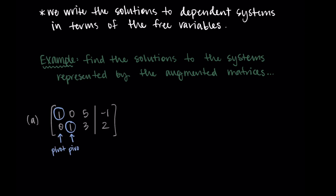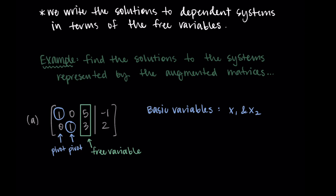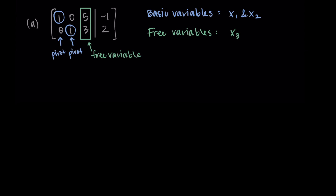Looking at our first matrix, I'll identify pivots column by column. The first column has a pivot and the second column has a pivot, so the third column represents our free variable. This tells me the basic variables are x1 and x2, and the free variable is x3. Reading off the equations from this row-reduced matrix: x1 plus 5x3 equals negative 1, and x2 plus 3x3 equals 2.